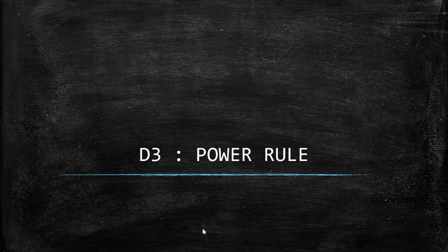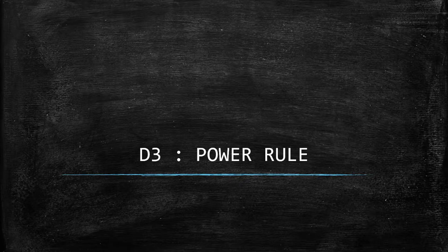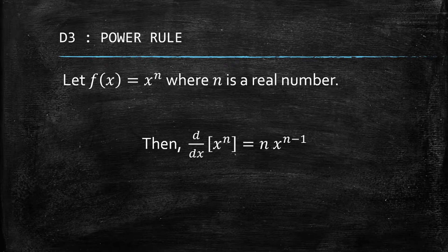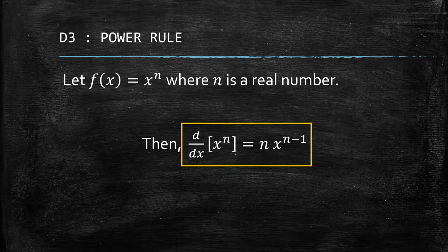We have now D3, so this is the third differentiation rule, and we call this one the Power Rule. The Power Rule states that if we have a function f(x) equal to x to the power of n, where n is a real number — it can be any constant — then the derivative of x to the power of n is just n times x to the power of n minus 1.